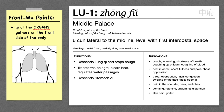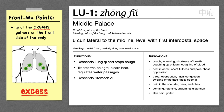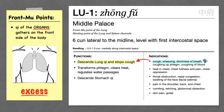The main strength of Lung 1 is treating excess conditions. This could be exterior pathogens like wind heat or wind cold that have penetrated into the lung organ, or it could be interior disharmony like lung heat or phlegm in the lung. If an excess pathogen is blocking the descending function of the lung, we might see things like cough, wheezing, and shortness of breath. So we can use Lung 1 to descend the lung qi and stop cough.